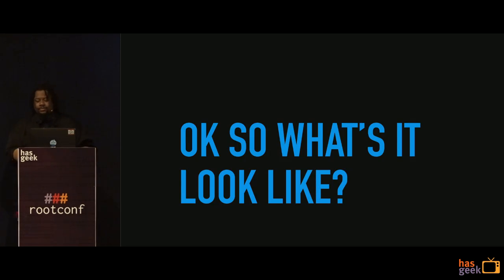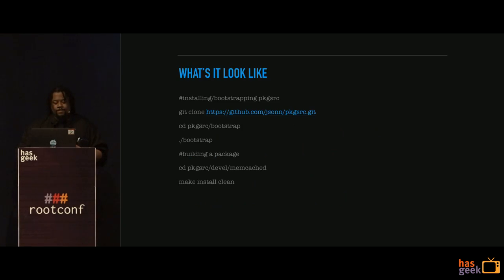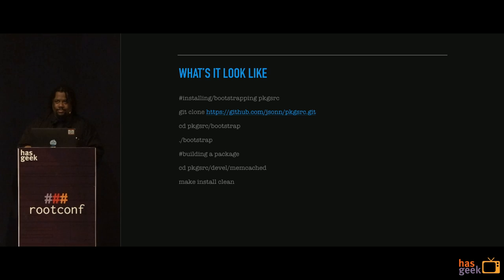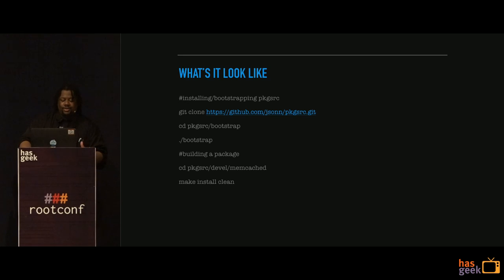So what does it look like? This is what it takes to get going with a very basic installation of PackageSource. You pull the source code down — that's what the git clone does. You then change into the created directory, go into Bootstrap, and run a bootstrap script. It takes about 15 minutes and then you're all set to go. Then you can cd into an application path — PackageSourceDevelopmentCache in this instance — and type make install clean, which will build the package, install it, and clean up all the temp files.